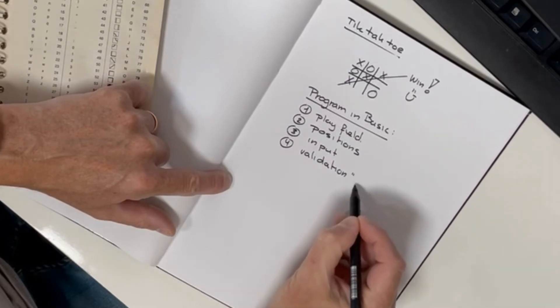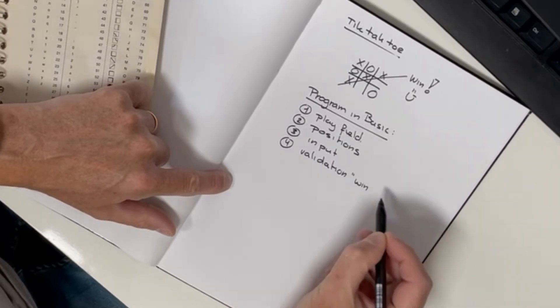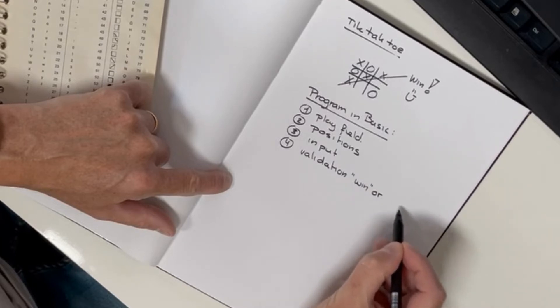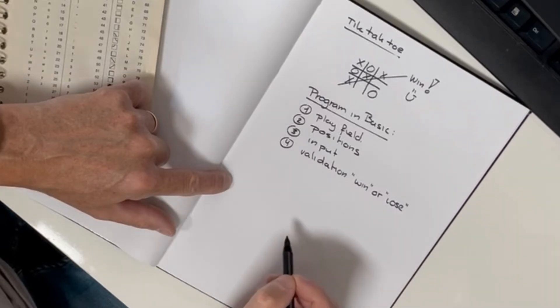So I think we need to find a solution for the following four parts: 1, a playfield; 2, keeping track on player movements and positions; 3, ability to input the player movements; 4, a way to determine win or lose.